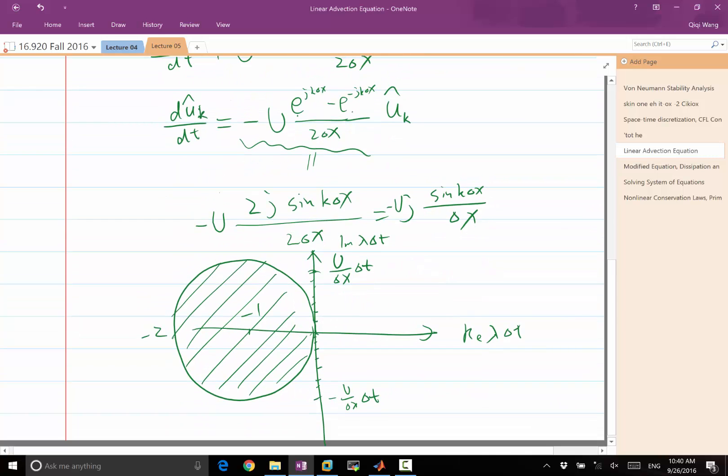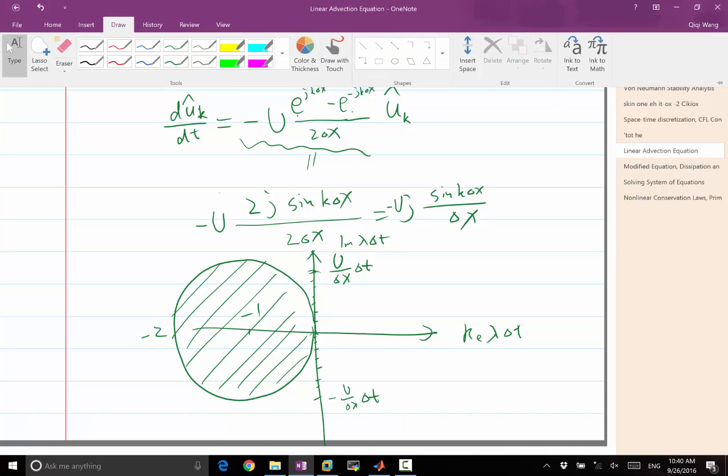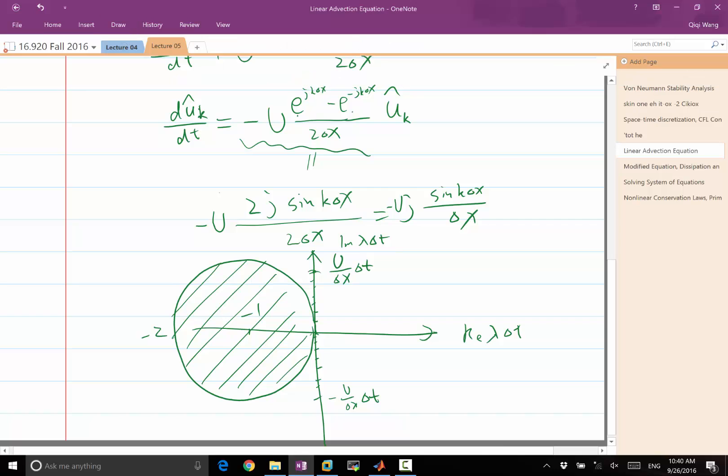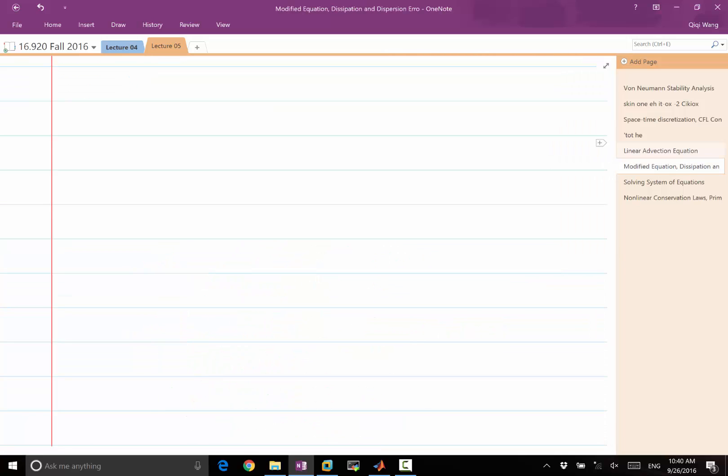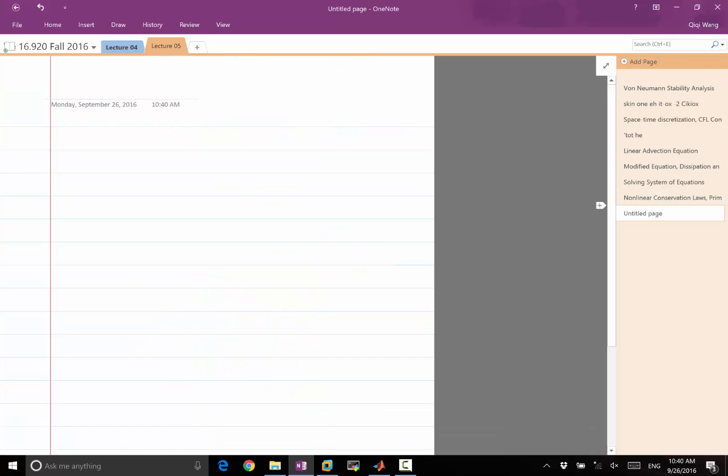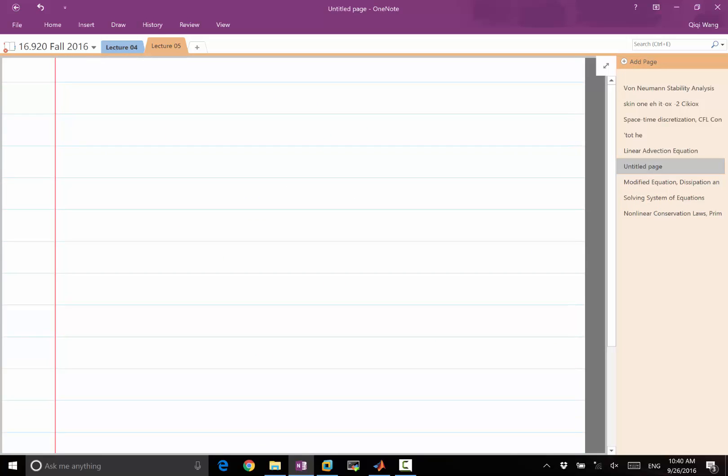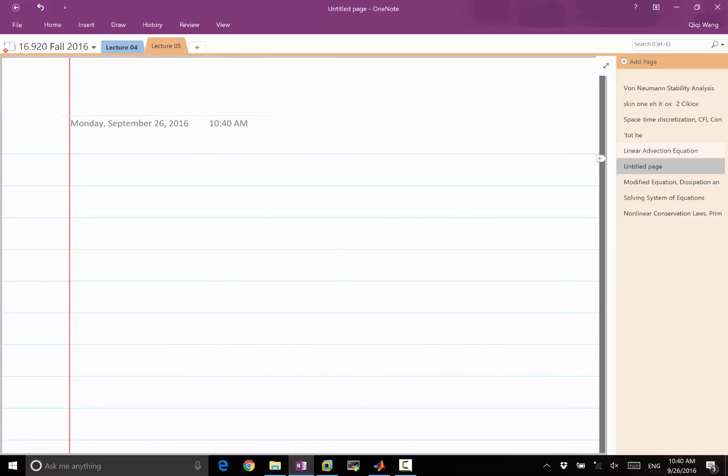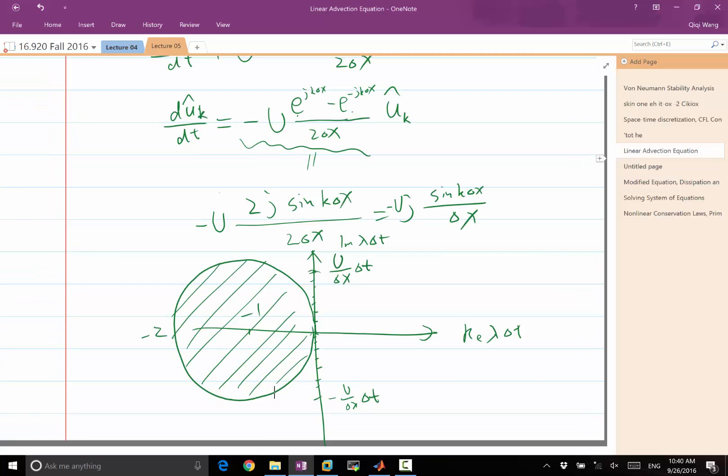Change the spatial discretization or change the time discretization. So let me explain both cases. First of all, forward Euler is not the only way to integrate differential equations. If you look at MATLAB's ODE45, it is using something that is a lot better than forward Euler. Not only is it more accurate, it is fourth-order and fifth-order, but also the stability region is different.